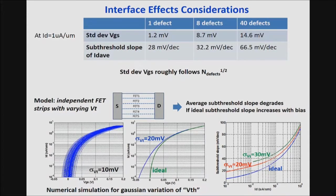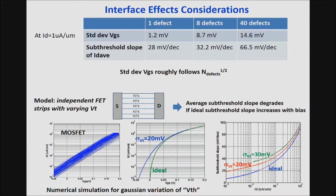We are all familiar with the fact that when averaging quantities on a log scale, the overall average is dominated by the values at the high end. For the TFET, this is a much more important effect at low currents than at high currents, giving rise to the variation in subthreshold slope. This would not occur for a MOSFET — with an identical standard deviation, there would be no change in subthreshold slope.